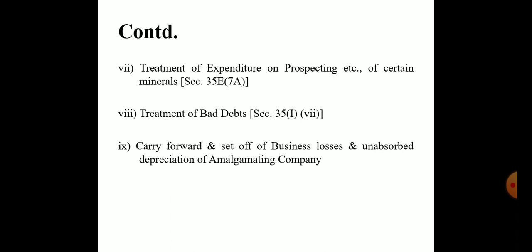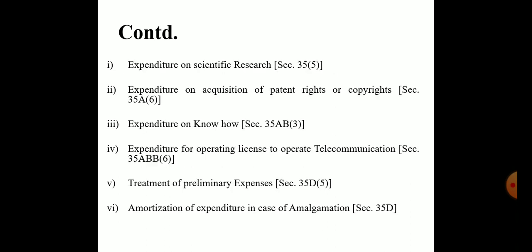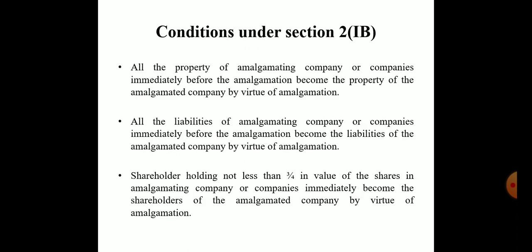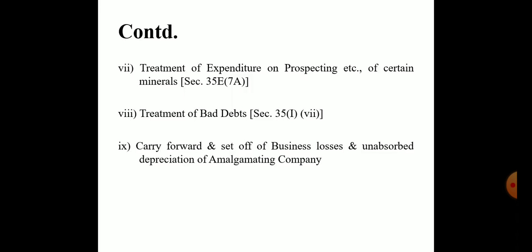So the amalgamated company can get a deduction under all nine points if they have qualified the conditions: those under Section 2 subsection 1B — the three property, liability, and shareholder conditions — and the requirement of being an Indian company. Thank you for listening; if you have any queries, you can text me.